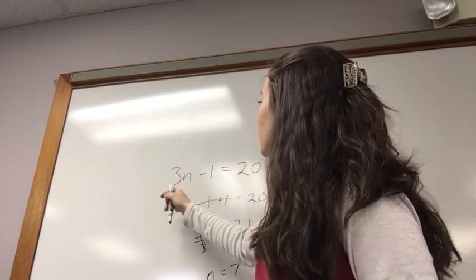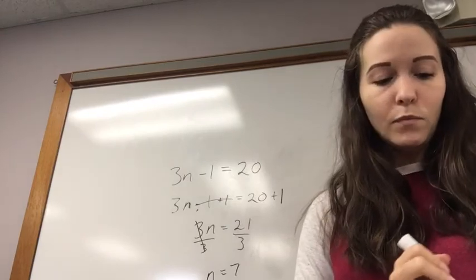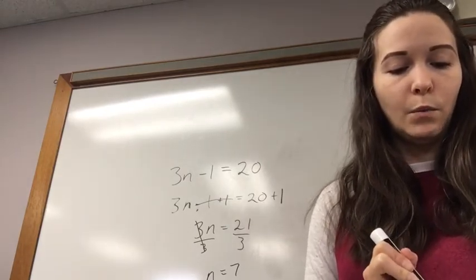So, 3 times 7 equals 21. 21 minus 1 equals 20. So, our problem would come out correctly.